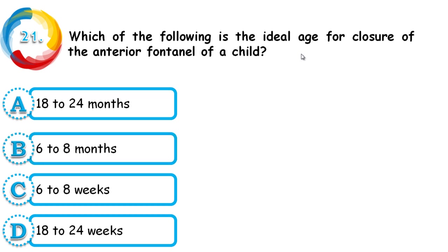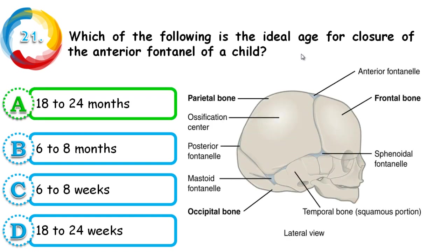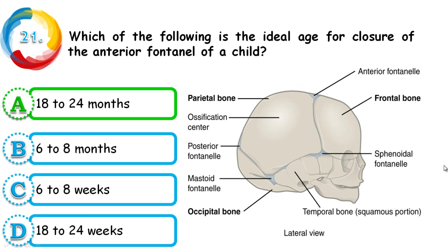Question 21: What is the ideal age for closure of the anterior fontanel of a child — 18–24 months, 6–8 months, 6–8 weeks, or 18–24 weeks? The correct answer is 18–24 months. The anterior fontanel is located at the connection of the frontal bone and parietal bone. In children below the age of two years, you can still palpate it.